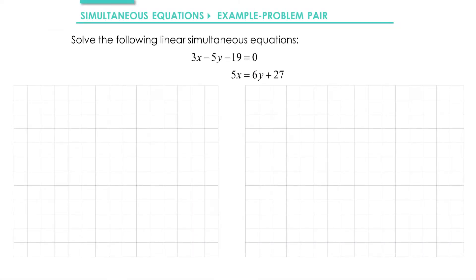Okay, in this example we're going to solve the following linear simultaneous equations. We've got 3x minus 5y equals 19 and we've got 5x equals 6y plus 27.